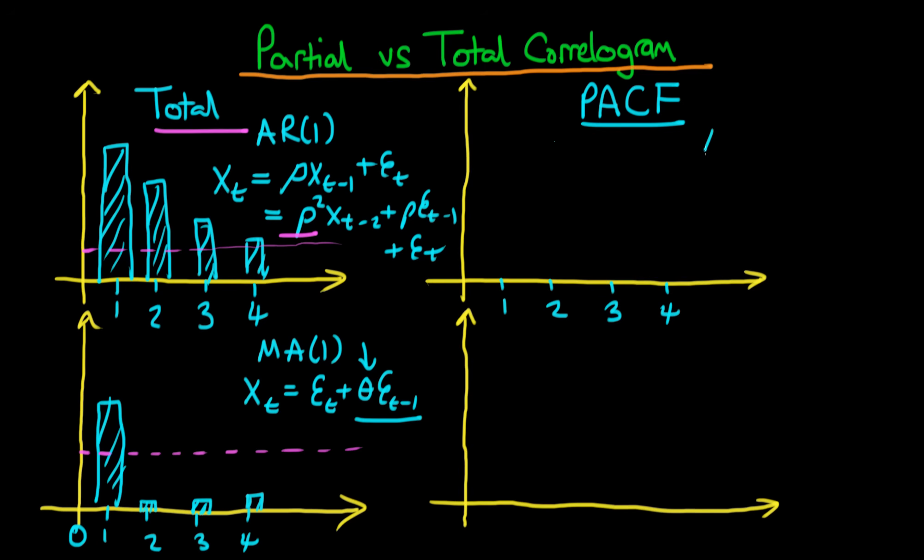So the idea with an AR1 process if we were to draw the partial autocorrelation function there will be a strong autocorrelation at the first lag. But then once we've removed the effect of the first lag then essentially there will be no residual correlation between the variable and further lags.